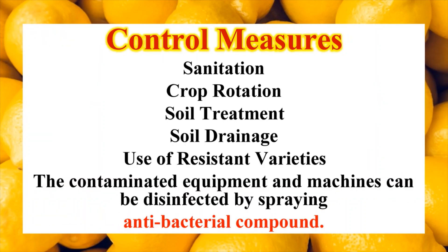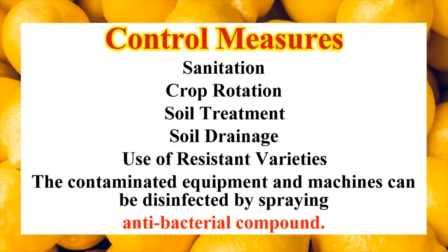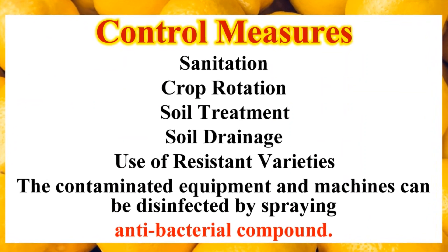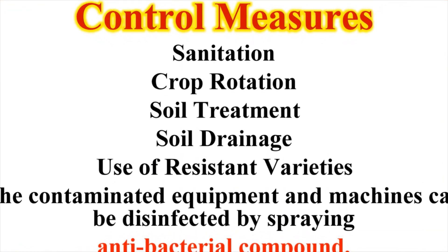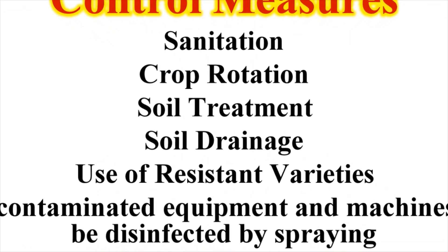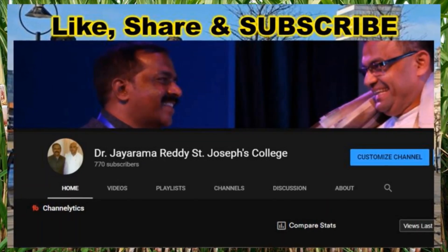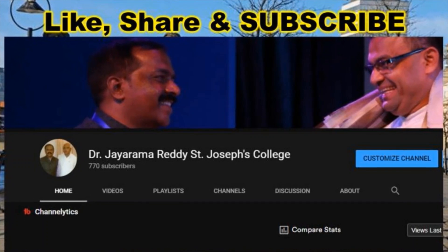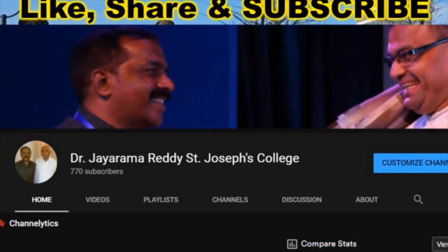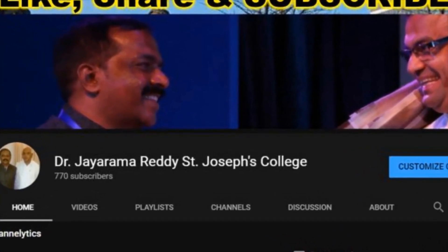Coming to the control measures: as usual, sanitation is the best method, along with crop rotation, soil treatment, soil drainage, and use of disease-resistant varieties. Nowadays we have citrus plants which are resistant against this disease. The best method is that contaminated equipment and machines can be disinfected by spraying antibacterial compounds, as equipment is one of the main methods by which the bacteria spread.